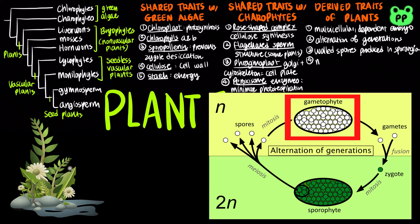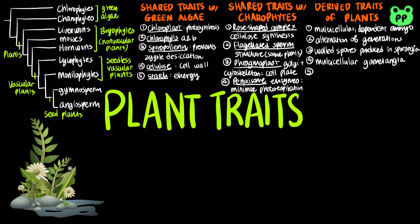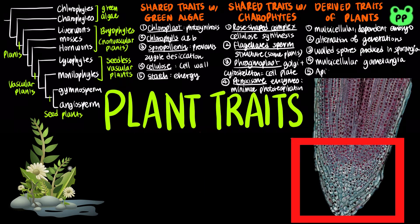Fourth, gametes are produced within sex organs of gametophytes, known as gametangia. The fifth trait is apical meristems, which are growth regions at plant tips, allowing plants to sustain continual growth in their length.